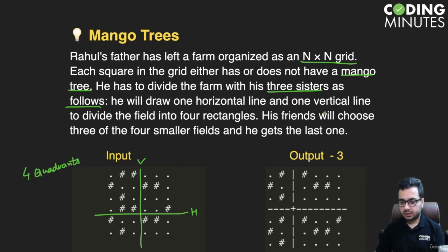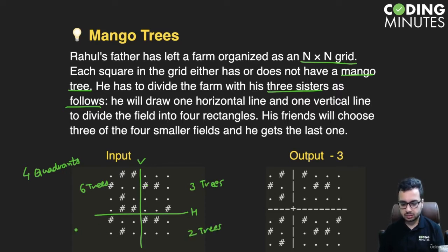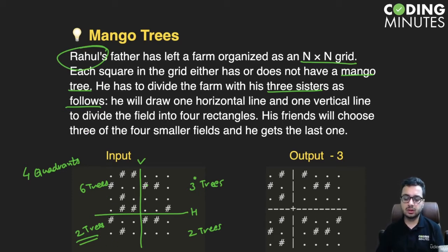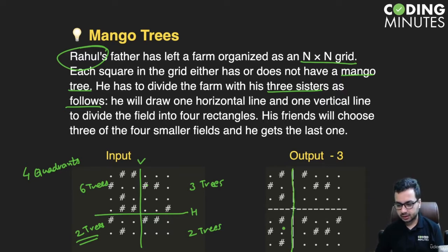His sisters will choose three of the four smaller fields and he gets the last one. For example, one partition might give six trees, three trees, two trees, and two trees. Rahul gets the smallest one. His idea is to maximize his minimum — so instead of making a partition like this, he makes a cut here and a cut here.